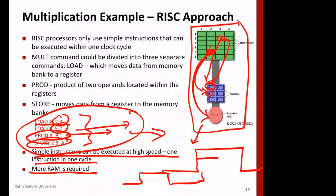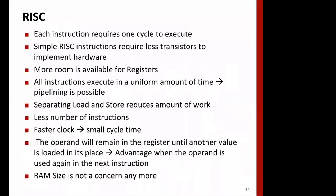One more factor is that a complex instruction may require a slower clock period. The clock speed will be slower in a CISC processor because the hardware cannot operate at as fast a pace. In RISC architecture, each instruction ideally requires just one cycle to execute.